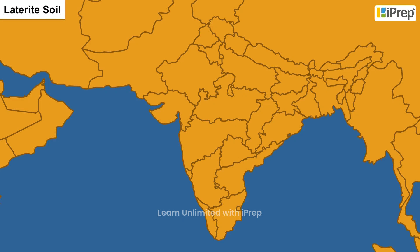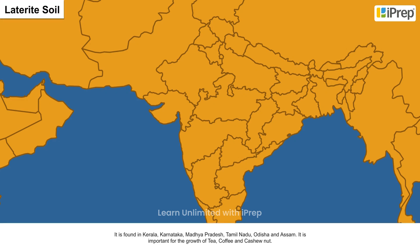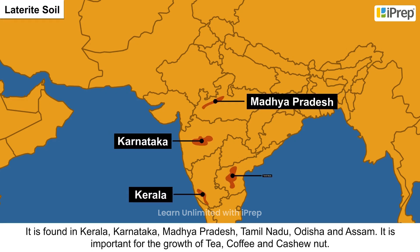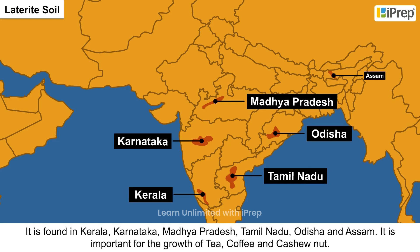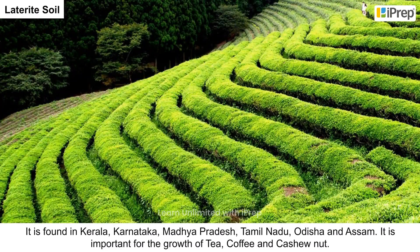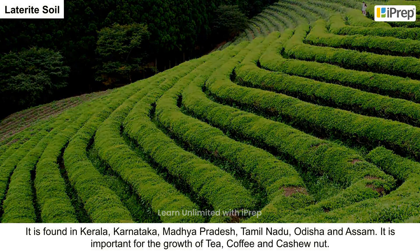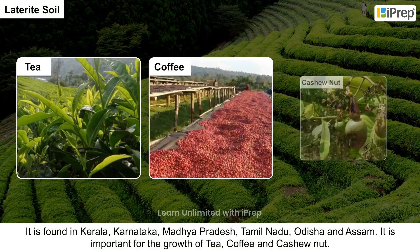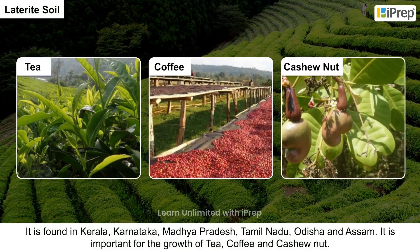Laterite soil is found in Kerala, Karnataka, Madhya Pradesh, Tamil Nadu, Odisha, and Assam. It is important for the growth of tea, coffee, and cashew nut.